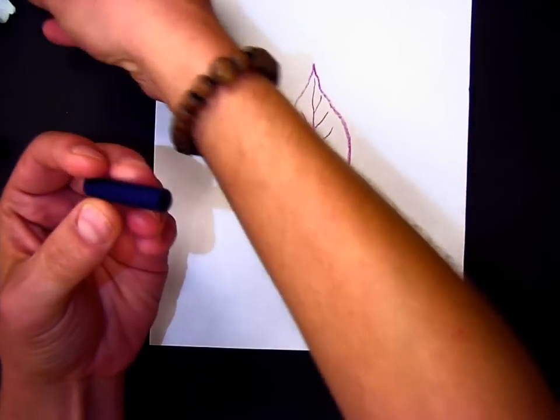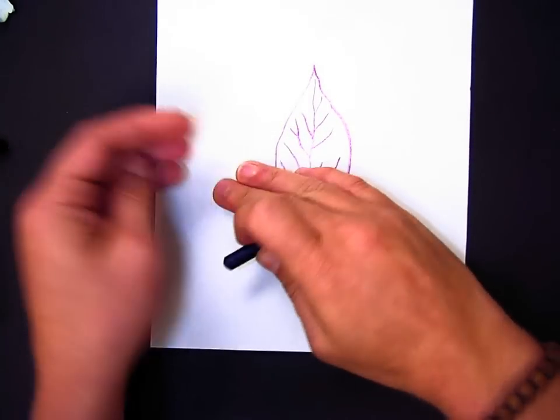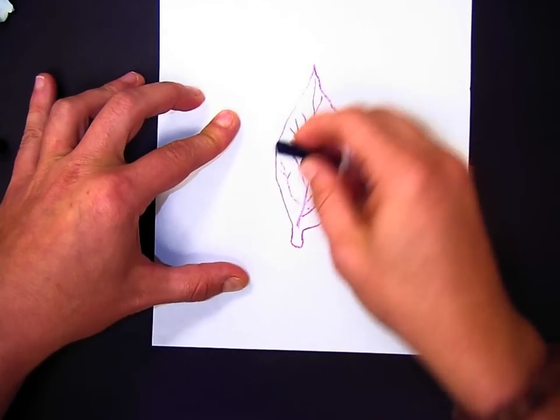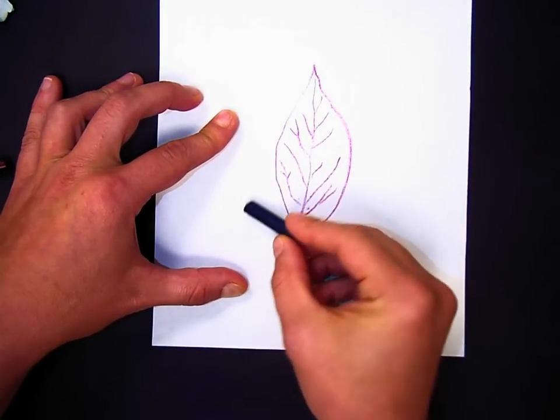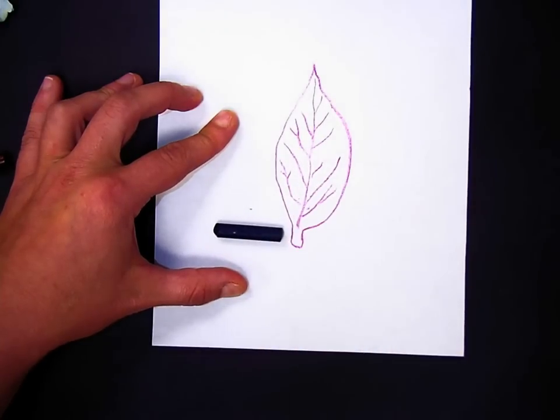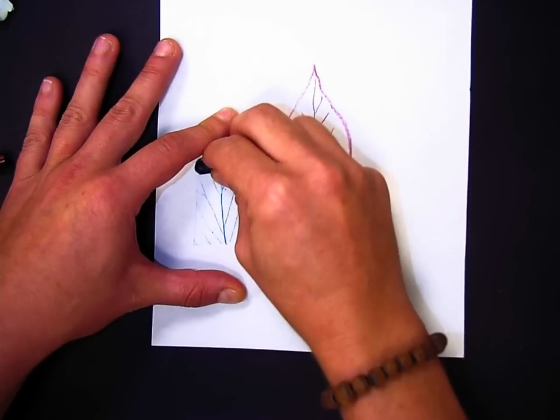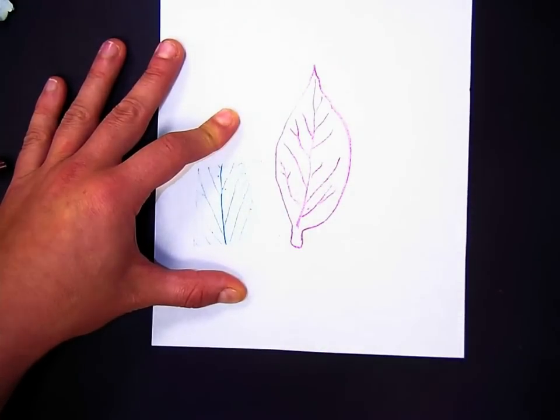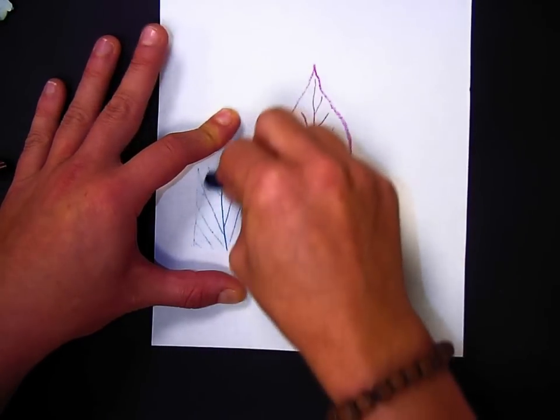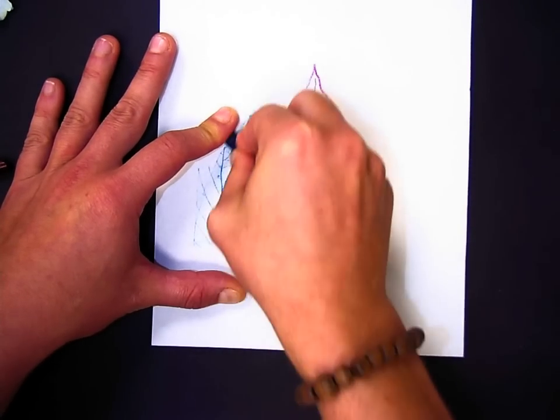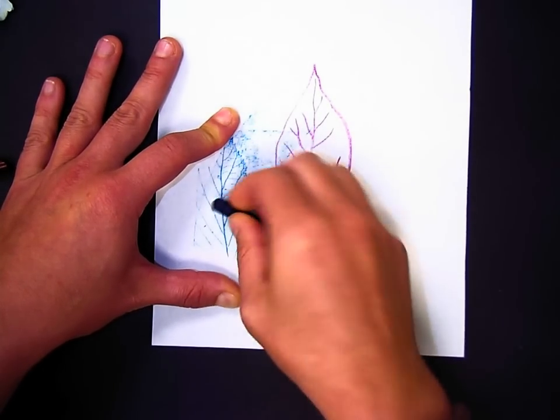Hold your leaf down. You don't want to do a rubbing with the tip of your crayon like you're holding a pencil. You want to lay it on flat on its side. Start in the middle, press down with medium pressure—not hard pressure—and work your way to the edge.